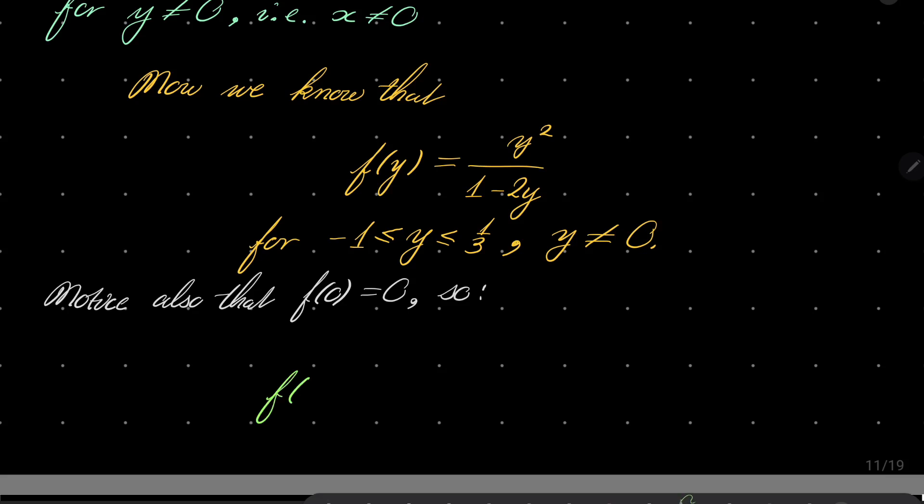So we get our final result. Notice that f of x, let's change y to x, f of x equals x squared over 1 minus 2x for x between minus 1 and 1 third.